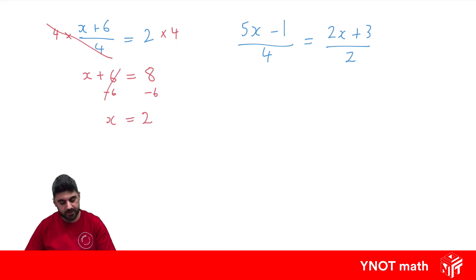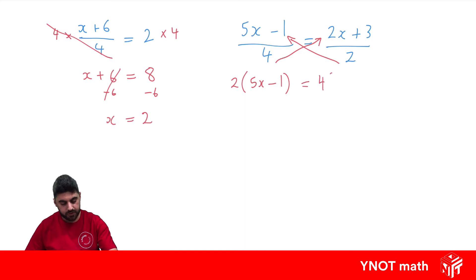We take this denominator and multiply it by this side, and take the other denominator and multiply it by the other side. So we end up with 2 times the first numerator equaling 4 times the second numerator. Expanding the brackets: 2 times 5x is 10x, 2 times minus 1 is minus 2, 4 times 2x is 8x, and 4 times positive 3 is positive 12.